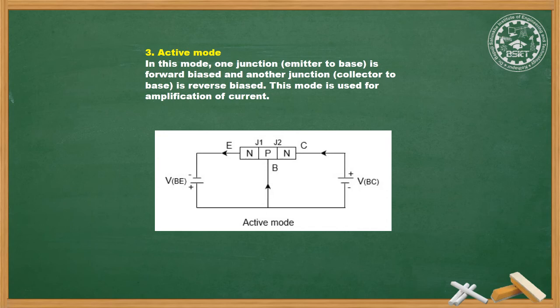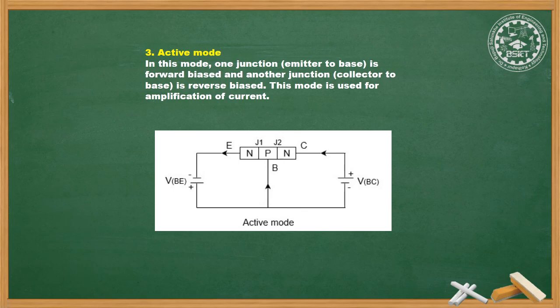The third mode is active mode. In this mode, the emitter-to-base junction is forward biased and the collector-to-base junction is reverse biased. This mode is used for amplification of current. In this mode, the base current is controlled, which in turn controls the collector current. Only in this mode can the transistor amplify a signal — it can increase the strength of the signal. The base-emitter junction is forward biased and the collector-base junction is reverse biased.